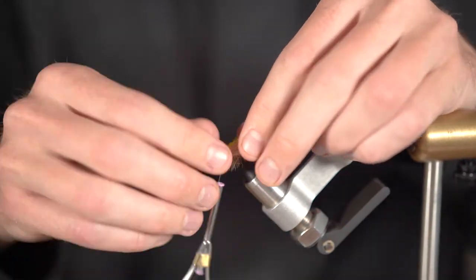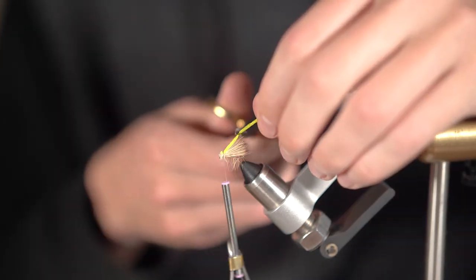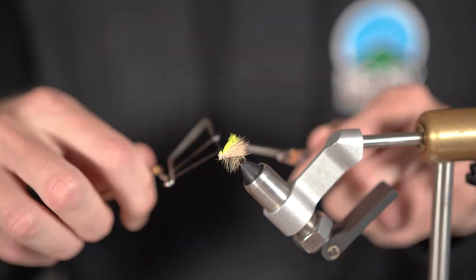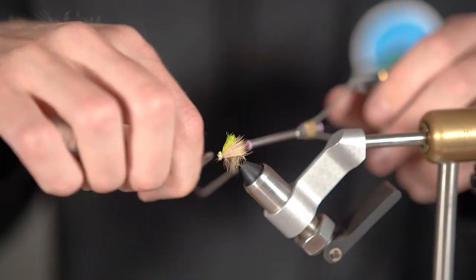Finally cut off a half inch piece of para post and tie that in to your desired length. Whip finish, hit it with a little bit of resin, light it up, and that bad jackson is finished.